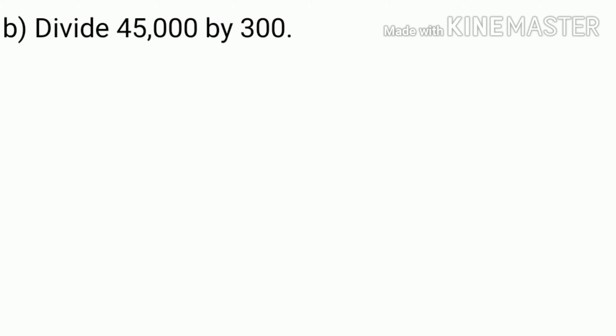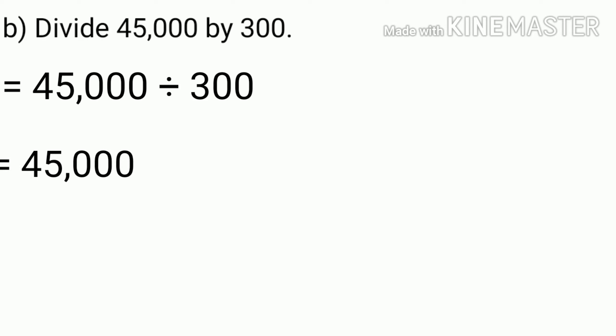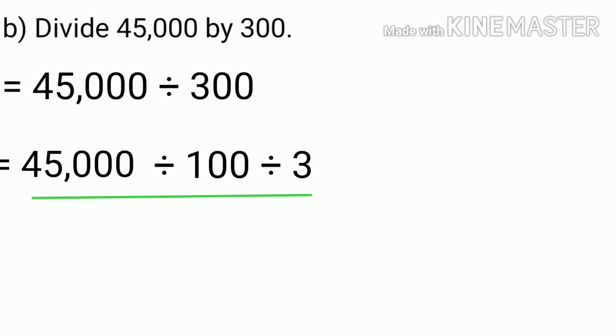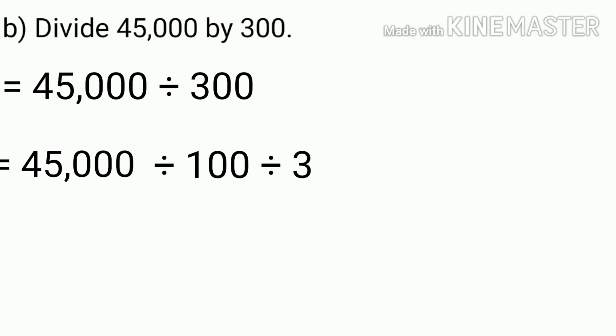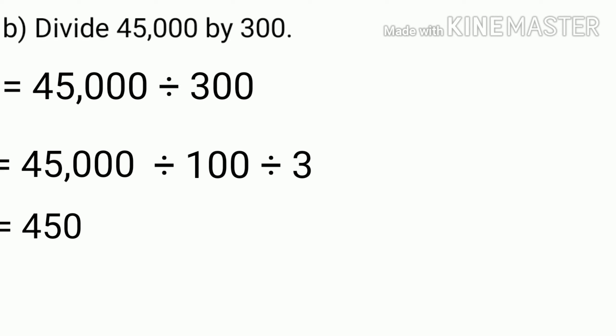Now, look at this example: divide 45,000 by 300. We can rewrite this by splitting 300 into 100 and 3. Because 45,000 divided by 100 divided by 3 is the same as 45,000 divided by 300. Now, in order to find the quotient of 45,000 and 300, we can first divide 45,000 by 100. When a number is divided by 100, we can get the quotient by removing two zeros from the end of the number. After dividing 45,000 by 100, we get 450 as the quotient.